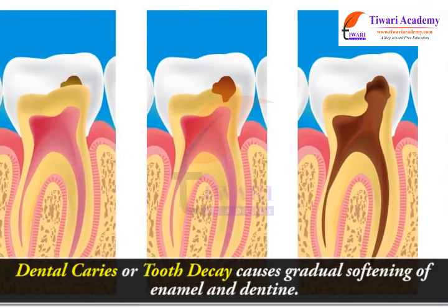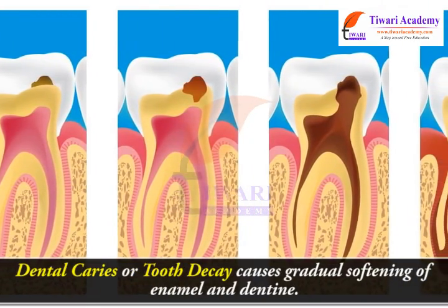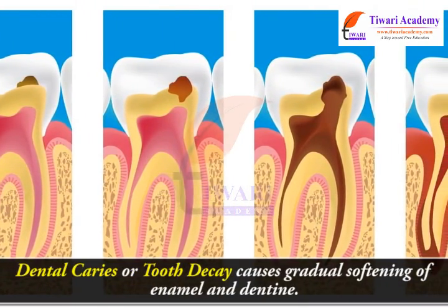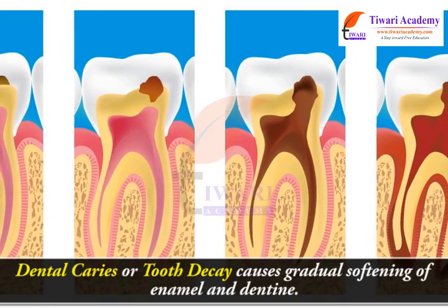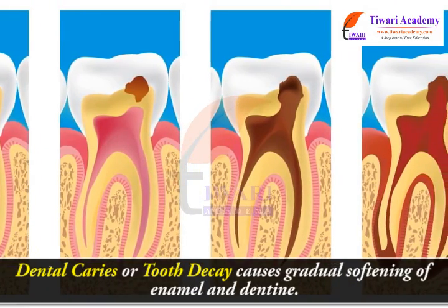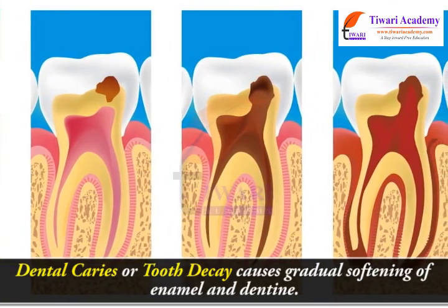Dental caries, or tooth decay, causes gradual softening of the enamel and dentine, which weakens the tooth structure.